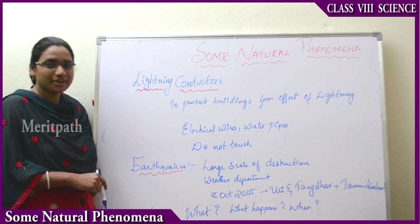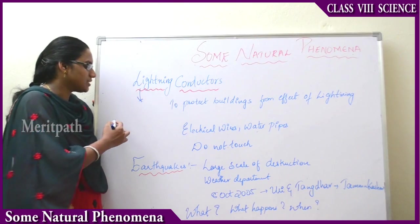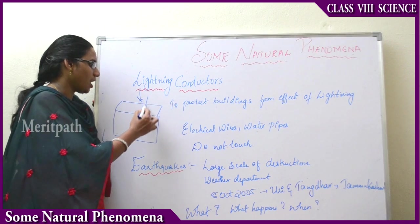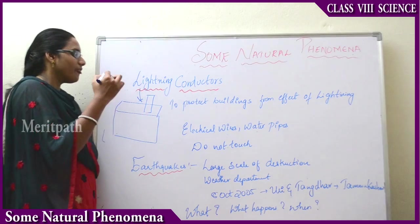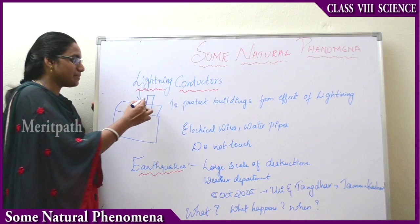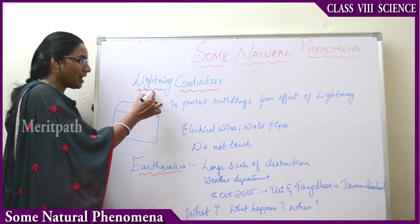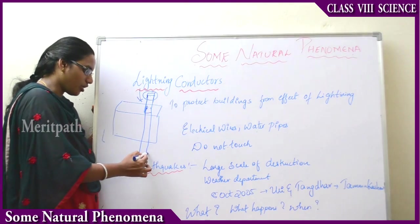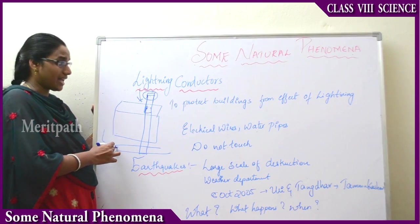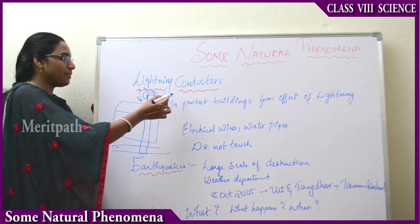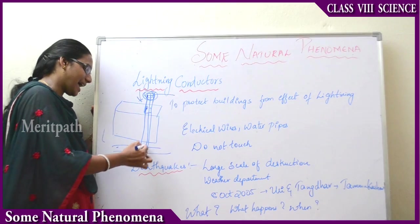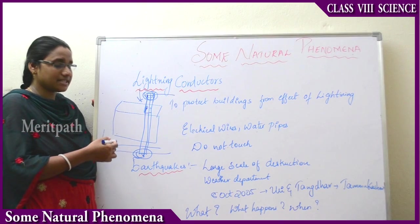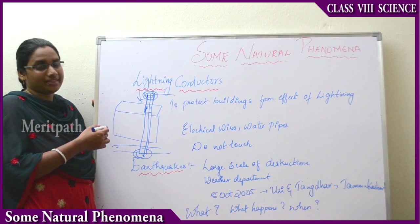Now let us look at lightning conductors, which are useful during lightning. On top of buildings you will observe a metallic rod of greater height than the house. These metallic rods of greater height act as lightning conductors. One end of these metallic rods is open and visible at the top, while the other end is dipped inside the earth's surface. Therefore, even if high-intensity lightning strikes, it will be absorbed by these metallic rods and directly transferred into the earth. This is a type of earthing used as a safety measure against lightning.